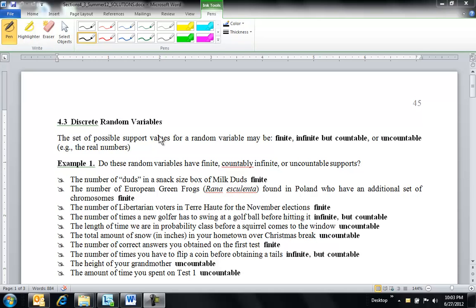In 4.1, we talked about random variables, and there are going to be two really distinct types of random variables. One of the two that we're introducing in section 4.3 is discrete random variables. And then when we get to chapter 6, we introduce continuous. But the type of random variable really depends on the support values, so the values that the random variable can take on.